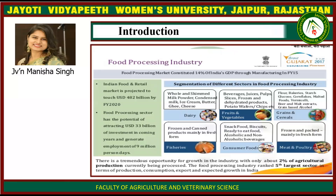The food processing market constituted 14% of India's GDP through manufacturing in FY15. The Indian food and retail market is projected to touch 482 billion US dollars by FY2020. The food processing sector has the potential to attract 33 billion US dollars of investment and generate employment of 9 million persons. There is tremendous opportunity for growth, with only about 2% of agricultural production currently being processed. The food processing industry is ranked the 5th largest sector in terms of production, consumption, export and expected growth in India.